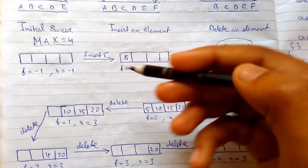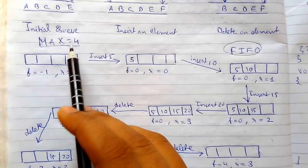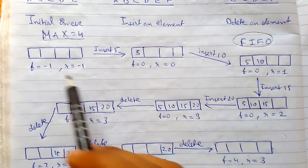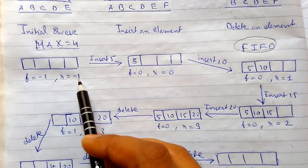I will explain it with the array implementation. Let's see how it works. The size of array is 4. Both front and rear variables must be set to minus 1.